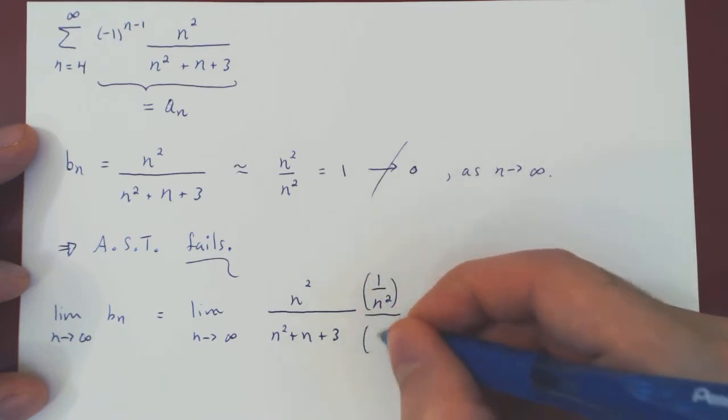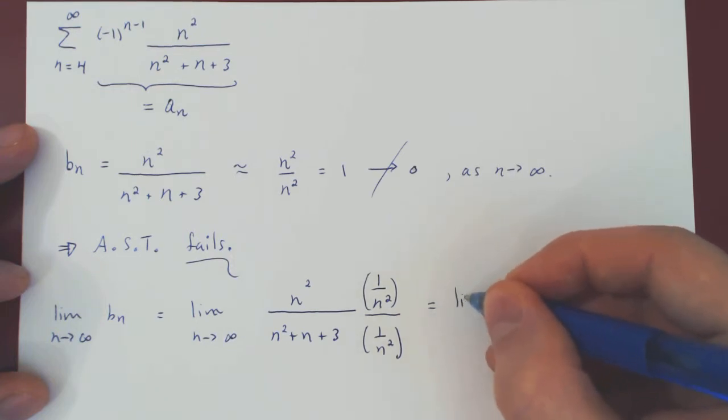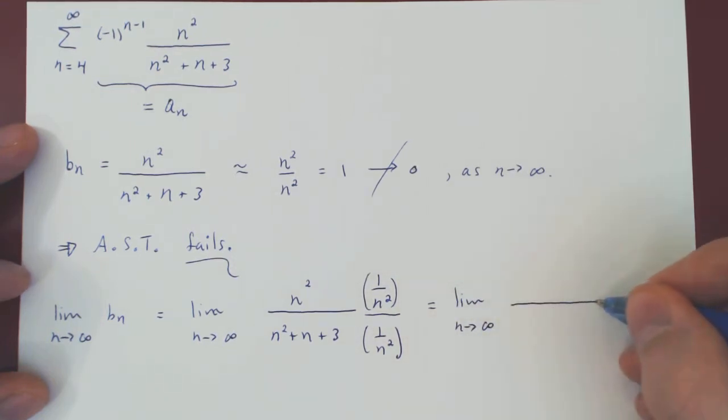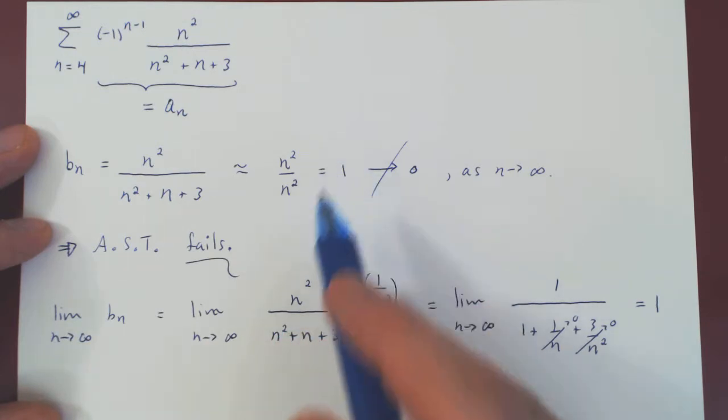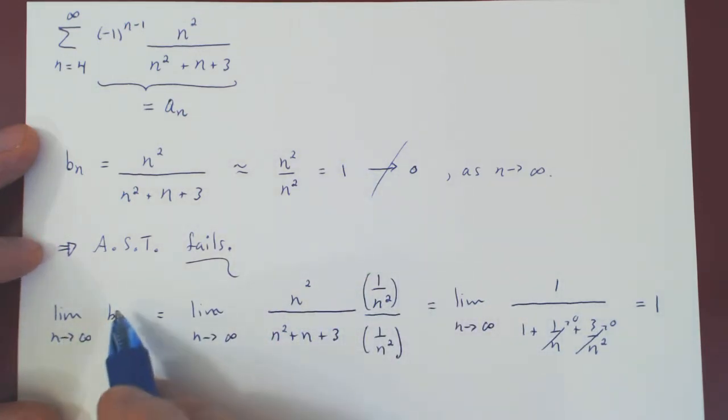Which will give you a very simple limit. As n goes to infinity, 1 over n and 3 over n squared clearly shrink to zero, and the limit is 1. So, our intuition was right on the money. As n goes to infinity, bn approaches 1.